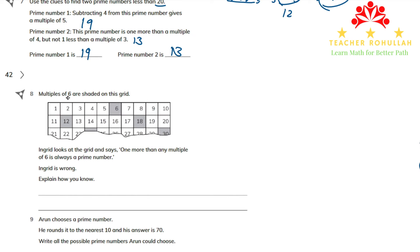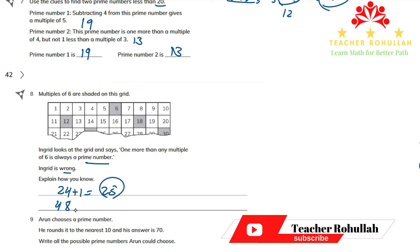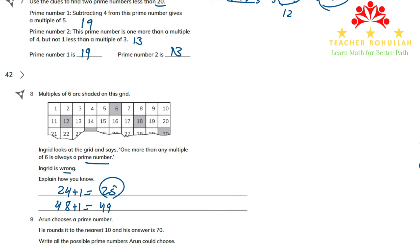In question 8, multiples of 6 — like 6, 12, 18 — are shaded on a grid. Ingrid says 1 more than any multiple of 6 is always a prime number, but Ingrid is wrong. Counter-examples: 1 more than 24 is 25, which is not prime. And 1 more than 48 is 49, which is not prime either.